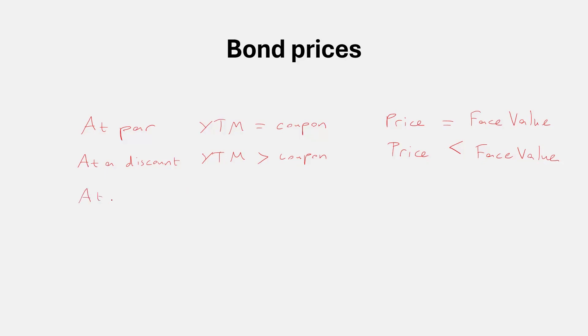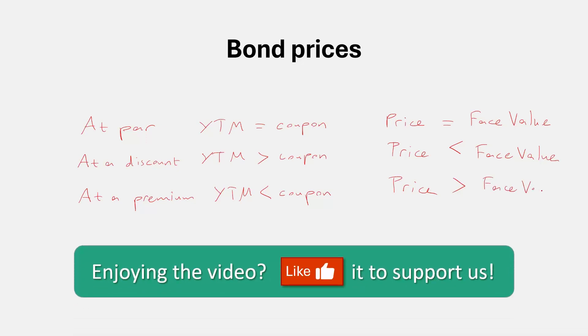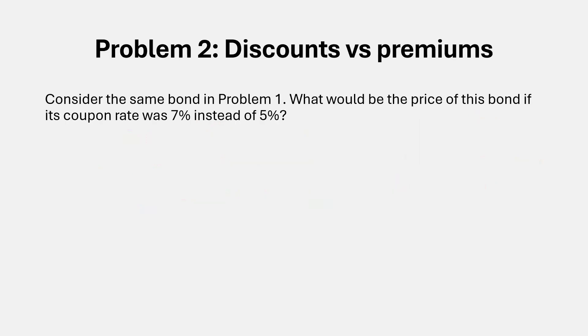And the final category is that the bond can trade at a premium. This occurs when the yield to maturity is relatively low compared to its coupon rate. In other words, the bond is paying a relatively high coupon compared to its yield. So such bonds are valuable. In that case, the price will exceed the face value. Let's see a practical example of this as well, which is our next problem.